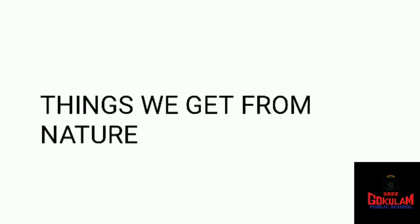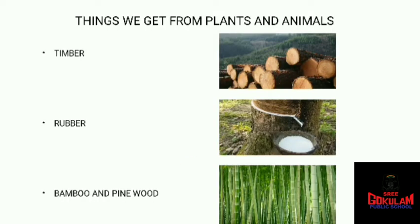Good morning students, welcome to a new General Science class. In this class we are going to study a new chapter called 'Things We Get from Nature.' We'll be mainly studying about many things we get from nature — from plants, animals, etc. Some examples are wool, fibers like cotton, and rubber.